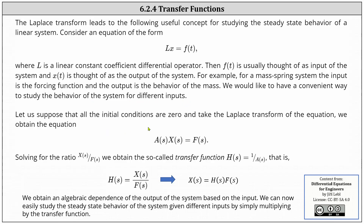Let us suppose that all initial conditions are zero, and we take the Laplace transform of both sides of the equation. The result is an equation of the form A(s) times X(s) equals F(s). If we solve for the ratio X(s) divided by F(s), we obtain what's called the transfer function H(s), which is equal to 1 divided by A(s).